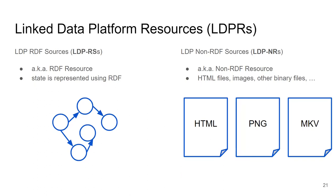One basic distinction in the Linked Data Platform is whether resources are RDF resources or not — we can store both kinds. When we have RDF resources it's quite natural. For non-RDF resources such as images, movies, or HTML pages, we can store them in the platform, but those objects are described by metadata RDF resources. So we have either RDF resources directly, or non-RDF resources with a metadata description in RDF.